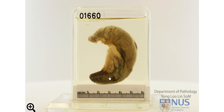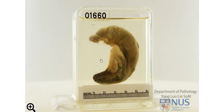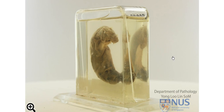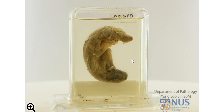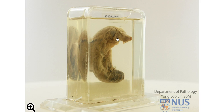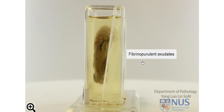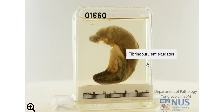We're looking inside the lumen here and this is the cross-section of the appendicil wall. Looking at the serosa, we can see that there are some yellowish exudates on the surface that make the serosa appear opaque rather than translucent. We can appreciate the exudates a little bit better looking at this other surface, and under the microscope we would be seeing fibrinopurulent exudates — fibrin and numerous neutrophils — and this would be an acute inflammatory infiltrate or exudate.